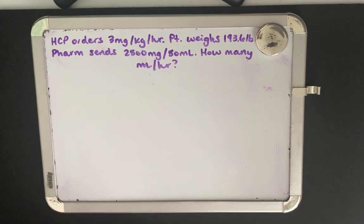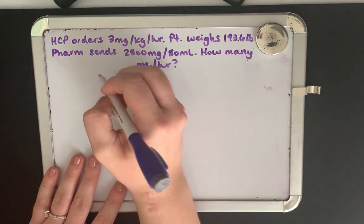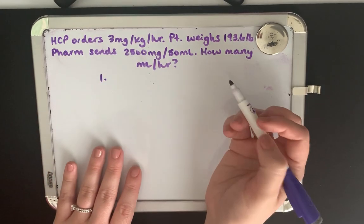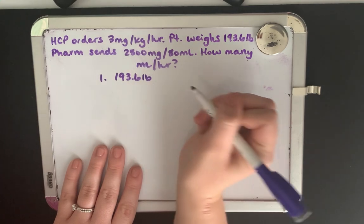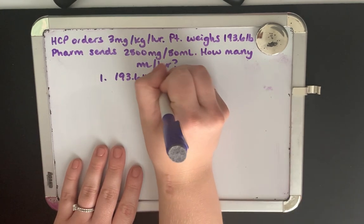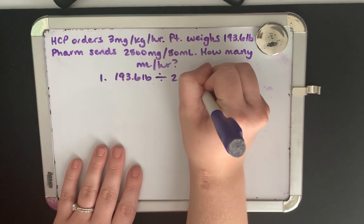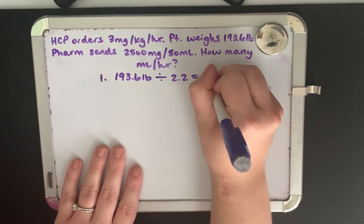So the first step with this would be to convert our weight. So if we're doing the stepwise approach, our patient weighs 193.6 pounds. If we divide that by 2.2, we get 88 kilograms.